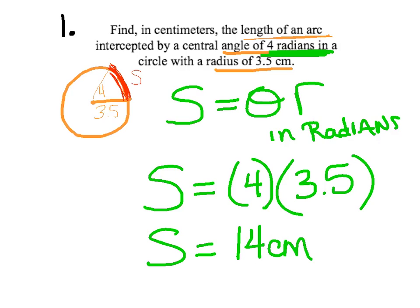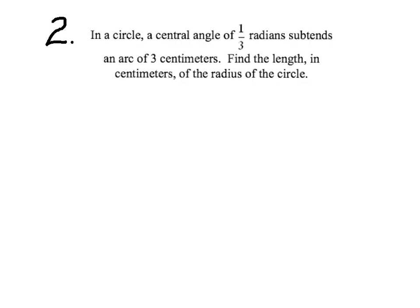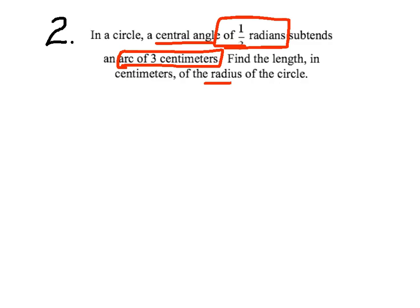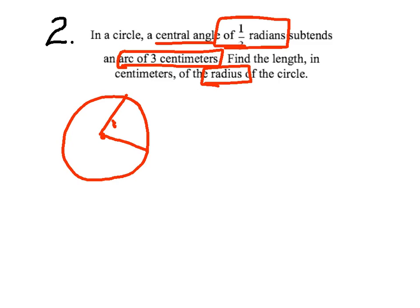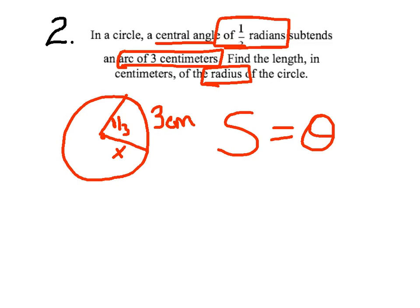They don't get too much more difficult — the key thing to catch is whether theta is in radians. Example 2: in a circle, a central angle of one-third radians has a subtended arc of 3 centimeters. Find the length in centimeters of the radius. I draw a circle: theta is one-third radians, arc s is 3 centimeters, and the question is: what is the radius r?